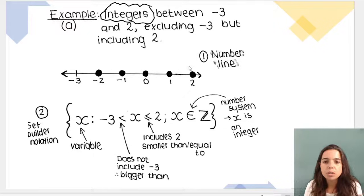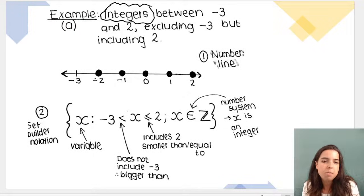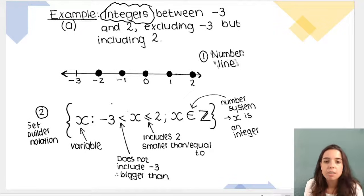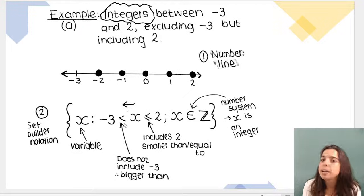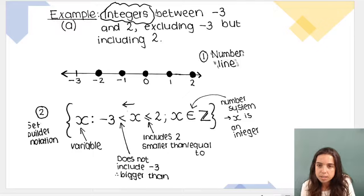If I were to do the set builder notation, you can see it over here. Again, my variable's x, then x, if you read it this way, x is greater than but not equal to negative 3. So basically our set does not include negative 3.